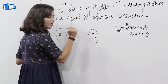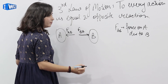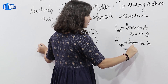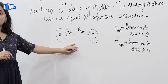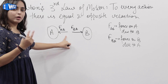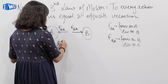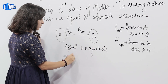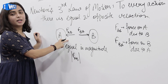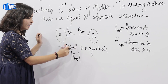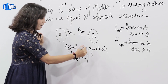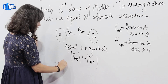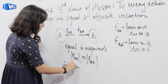Body A, body B पर force exert कर रही है — it is force on body B due to A. What is FBA? Force on B due to A. So according to Newton's 3rd law, both the forces are equal and opposite — equal in magnitude. That means जितनी force body A पर लग रही है, उतनी ही force A, B पर लगा रही है.